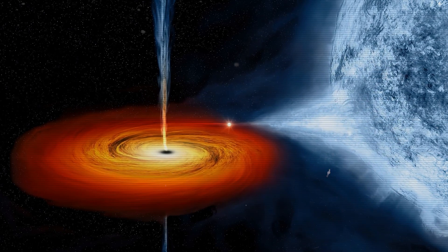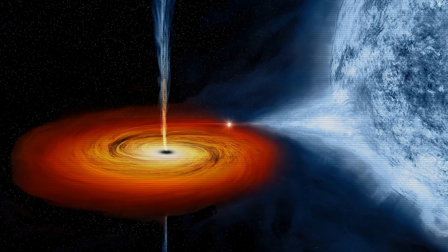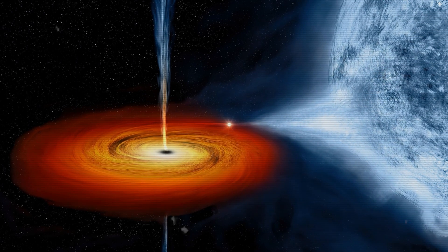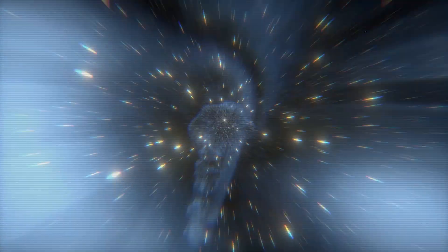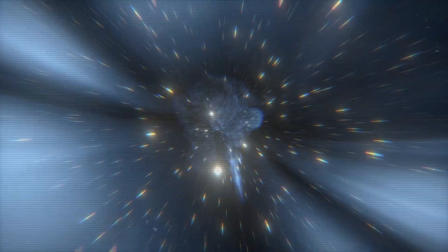Einstein's theory of general relativity mathematically predicts the existence of wormholes, but none have been discovered to date. A negative mass wormhole might be spotted by the way its gravity affects light that passes by. Certain solutions of general relativity allow for the existence of wormholes where the mouth of each is a black hole.